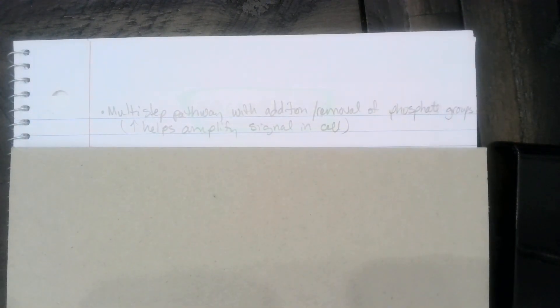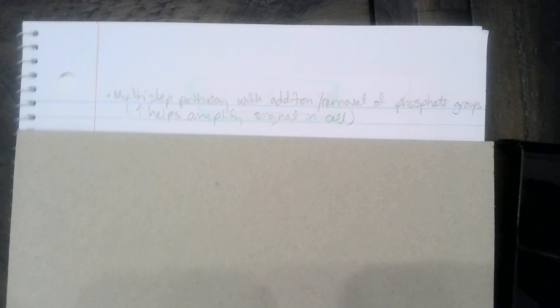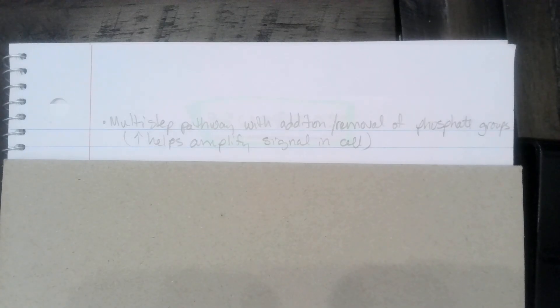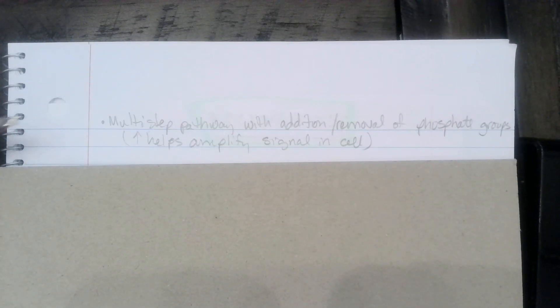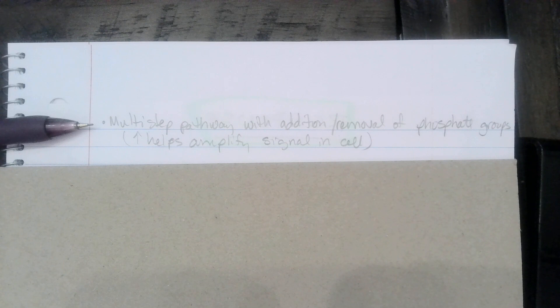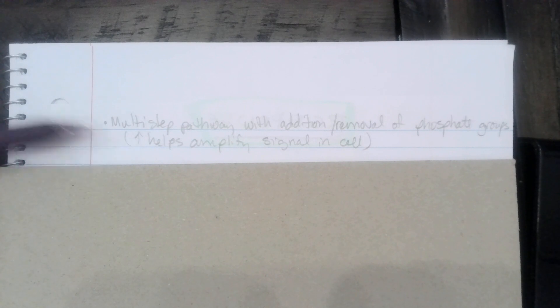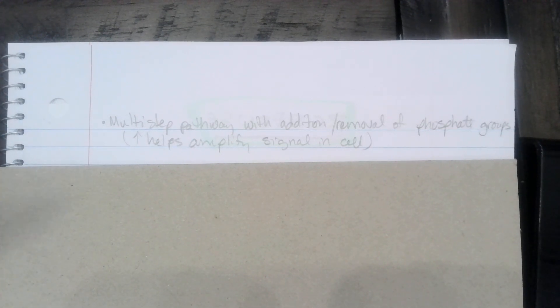Next is transduction. Transduction is a multi-step pathway with the addition or removal of phosphate groups. This multi-step pathway helps to amplify the signal in the cell. Think back to the phosphorylation cascade — you start with one and it spreads to two, and they both spread and it amplifies.